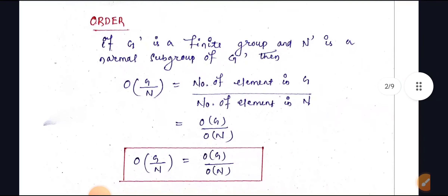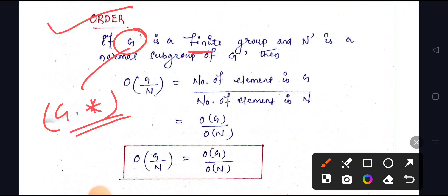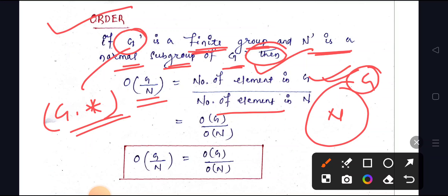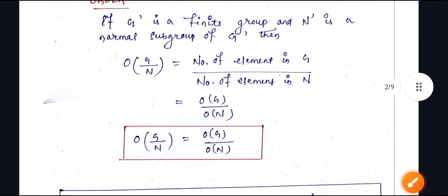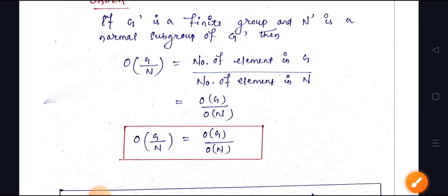Now let us look at the order of a factor group. If G* is a finite group and N is a normal subgroup of G, then the order of G/N — the order of the factor group or quotient group — is defined as the number of elements in G divided by the number of elements in N. That is, order of G/N = order of G / order of N.